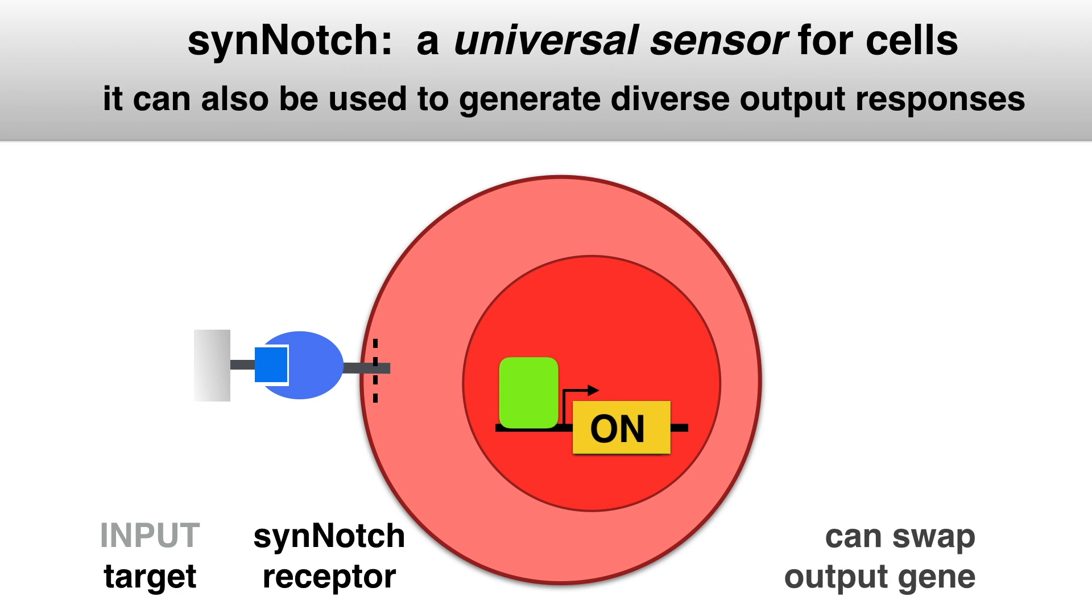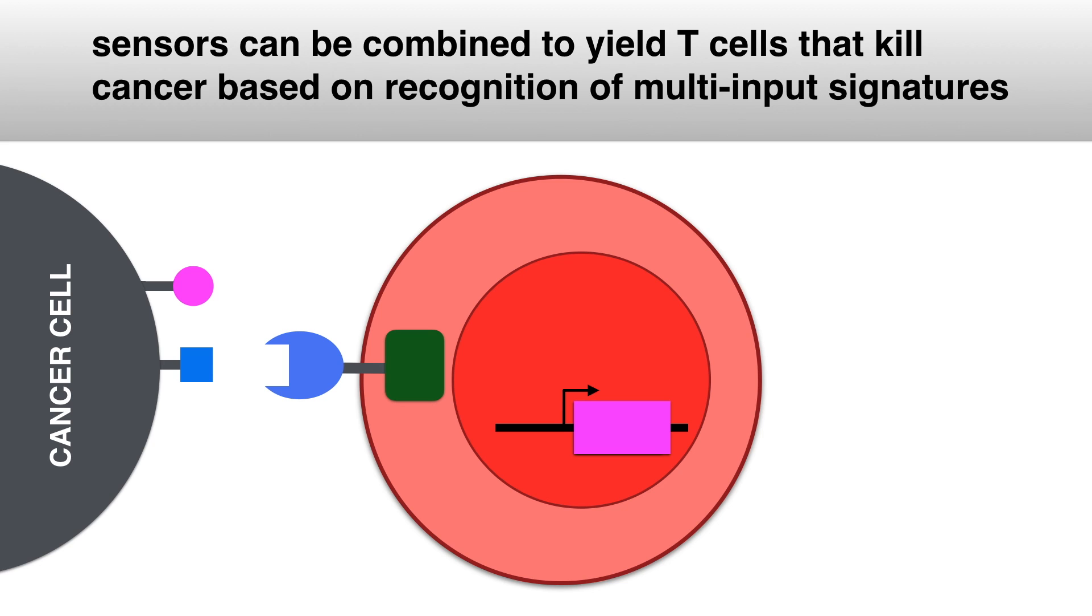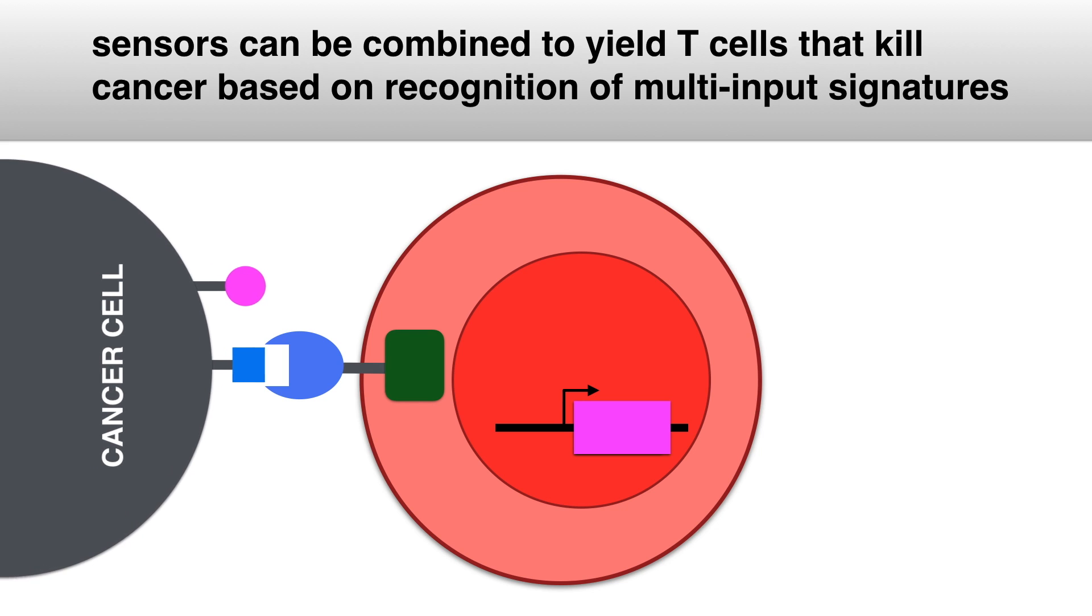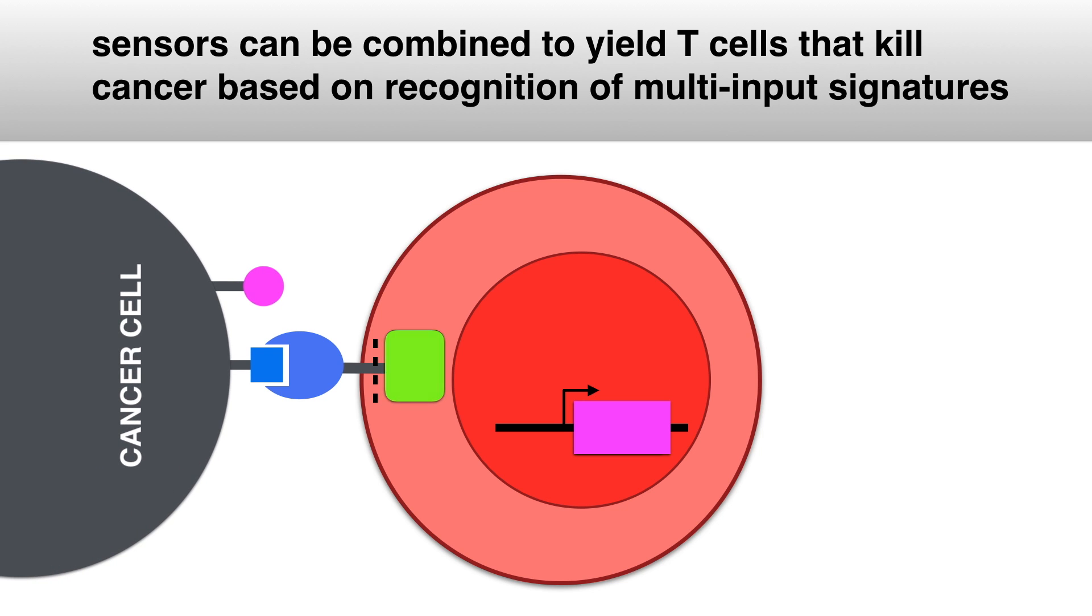Recently we have shown that such sensors can be combined to engineer T-cells that precisely kill cancer cells based on recognition of multi-input signatures.